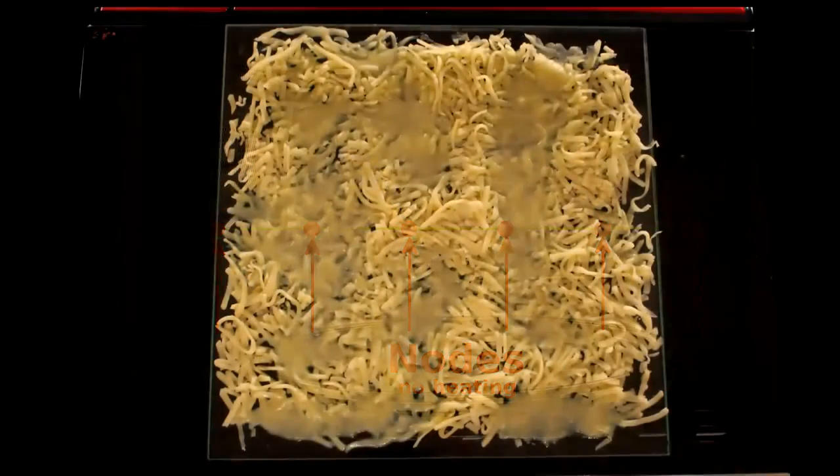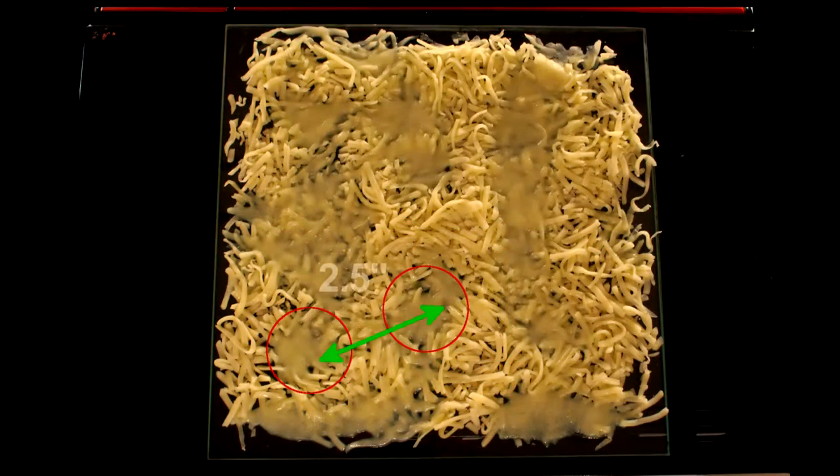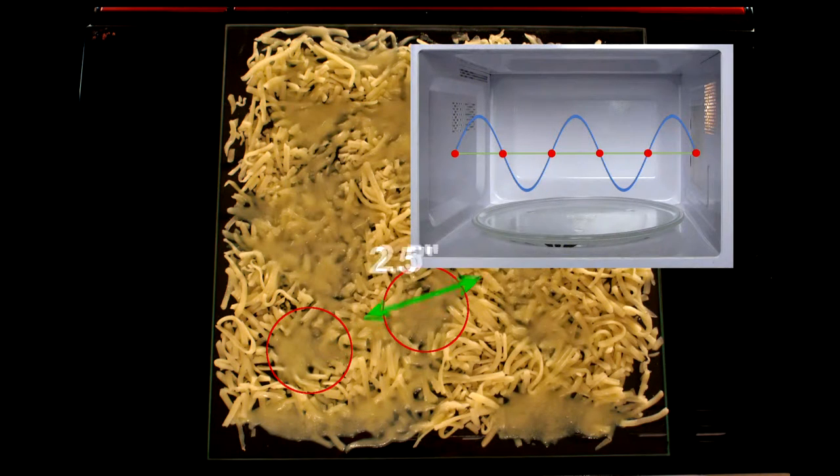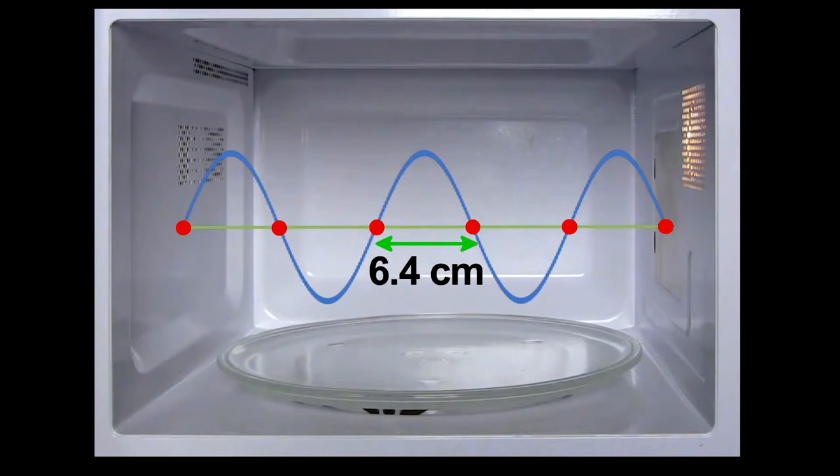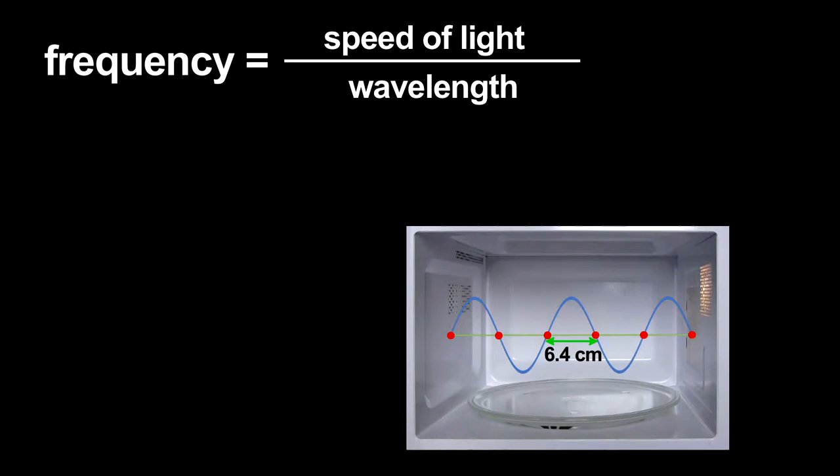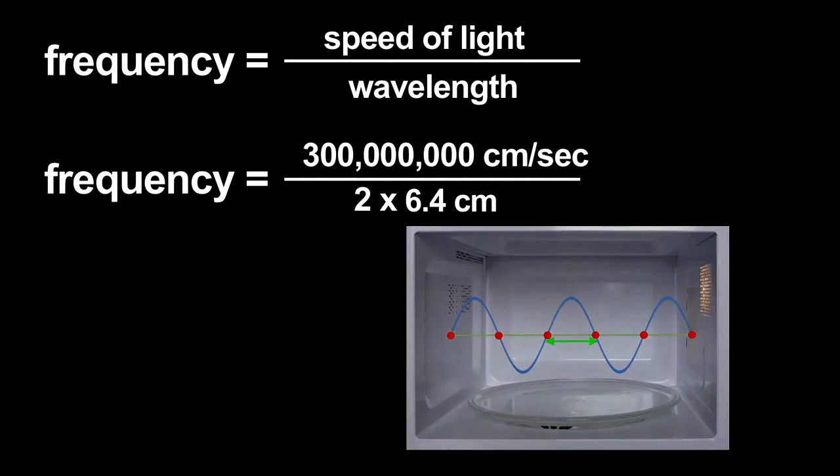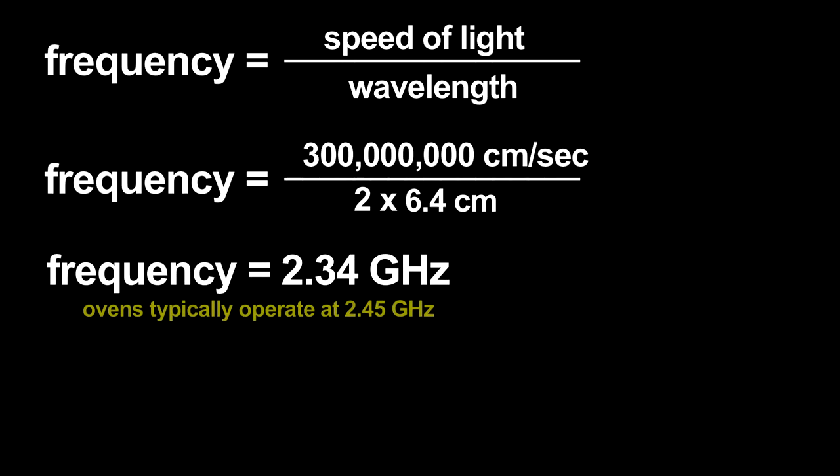If I measure the distance between melted cheese spots, I find about two and a half inches. That would be half the wavelength, the distance between nodes, and is pretty close to the actual wavelength of microwave radiation used. Using that wavelength, I can estimate the microwave radiation's frequency. The frequency is related to the wavelength by the speed of light. I get an answer that only has a 4 or 5 percent error. Not bad for this primitive measurement.